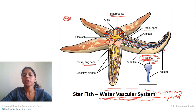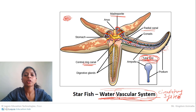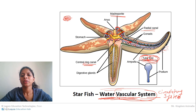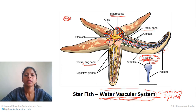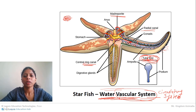The water vascular system also does circulation of food material and gases, and throws out waste material. It helps the animal to capture food and to escape danger — a life-saving system for the starfish. Sea urchin and sea lily also show the presence of a water vascular system. Water vascular system is the speciality of Echinodermata.